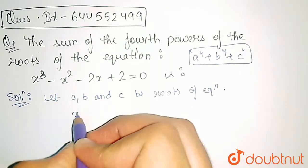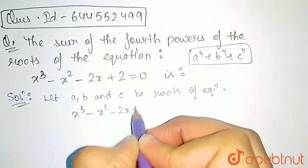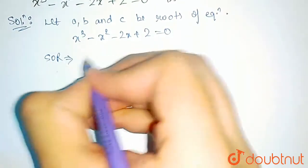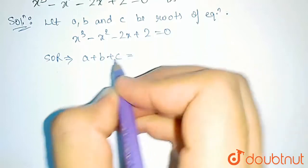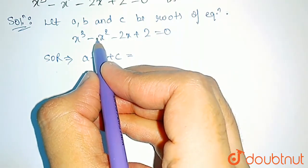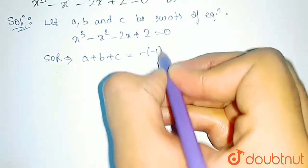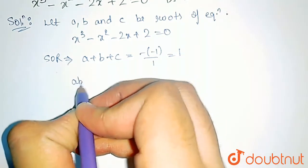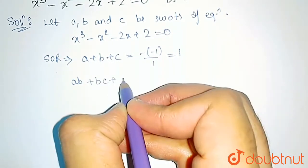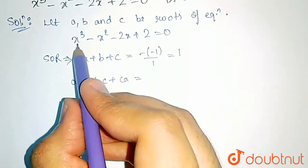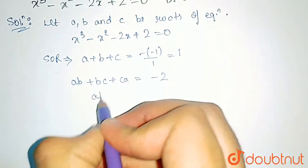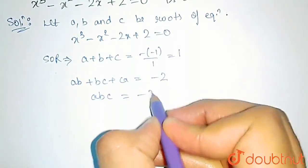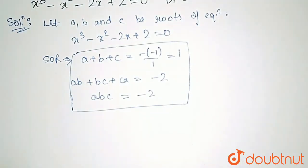Writing the equation x³ - x² - 2x + 2 = 0. The sum of roots a + b + c equals minus of minus 1 divided by 1, which is 1. The product of roots taken two at a time, ab + bc + ca, equals minus 2 divided by 1, that is minus 2. And the complete product of roots, abc, equals minus 2 divided by 1, that is minus 2. These are the three important relations.